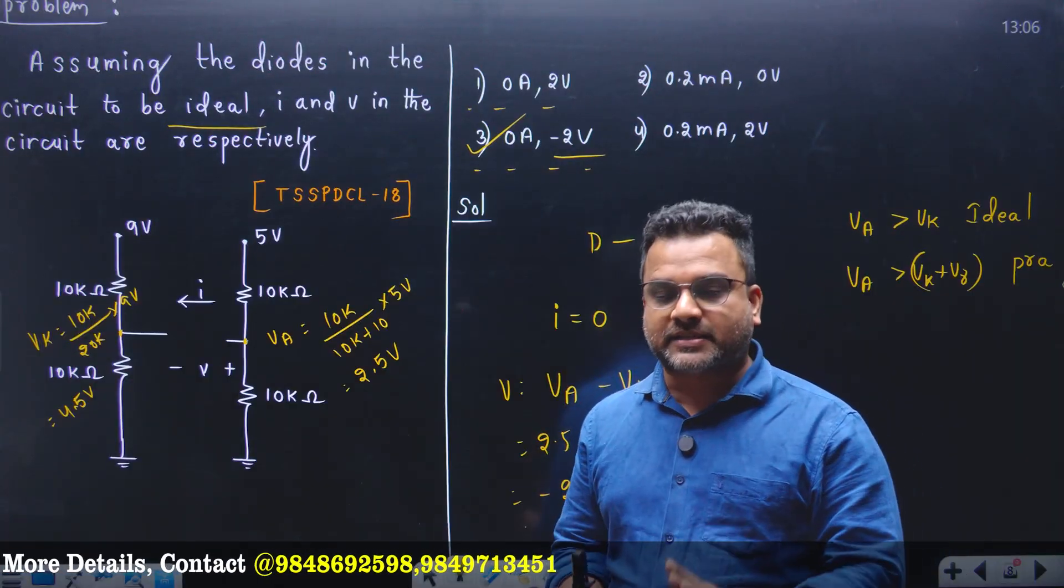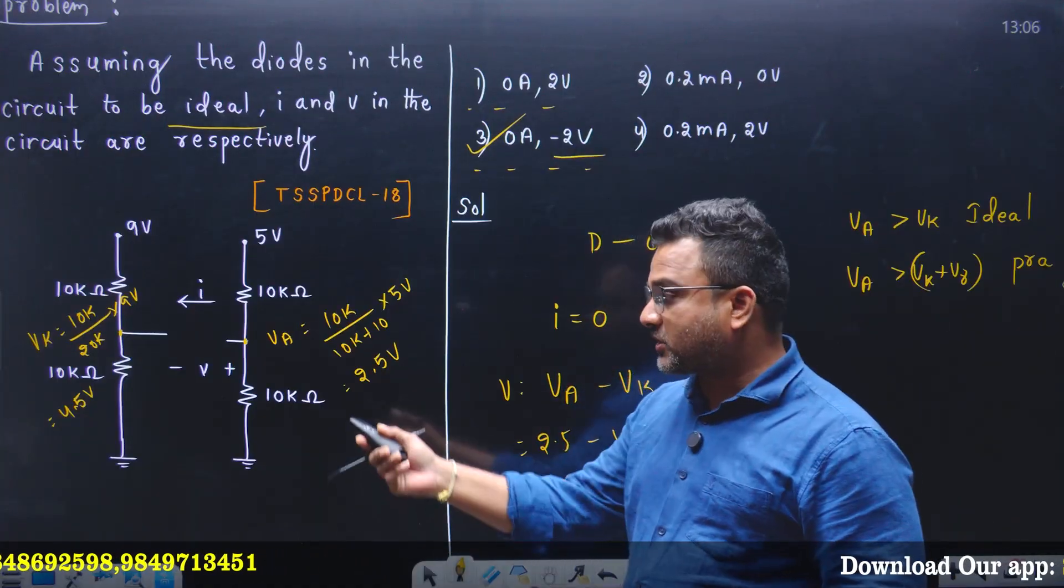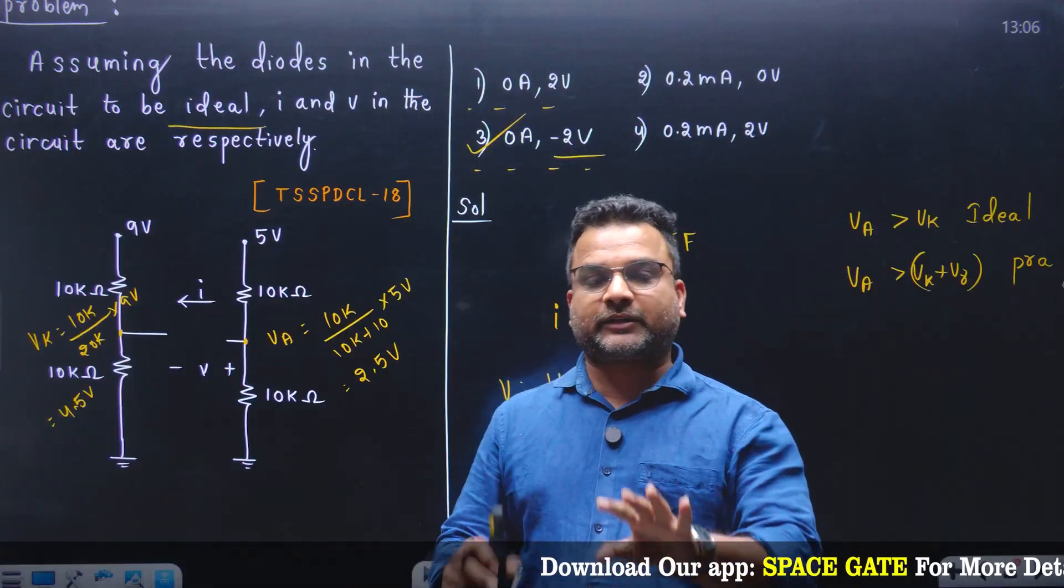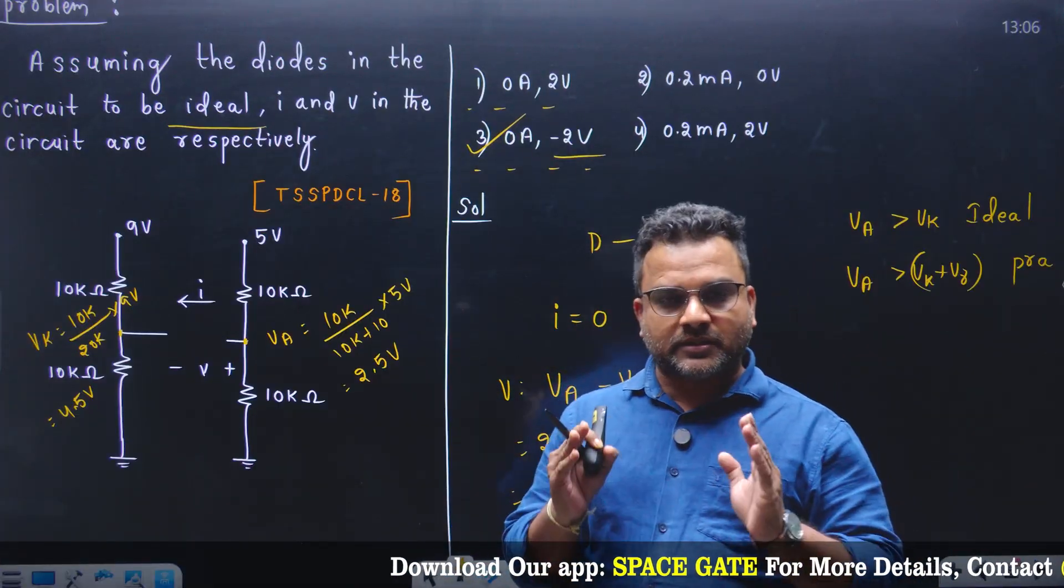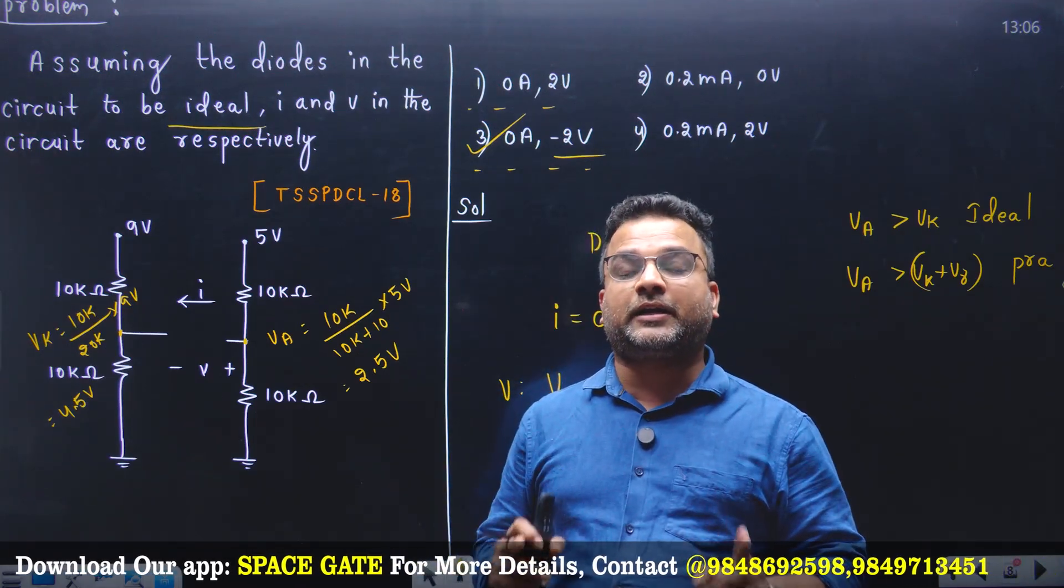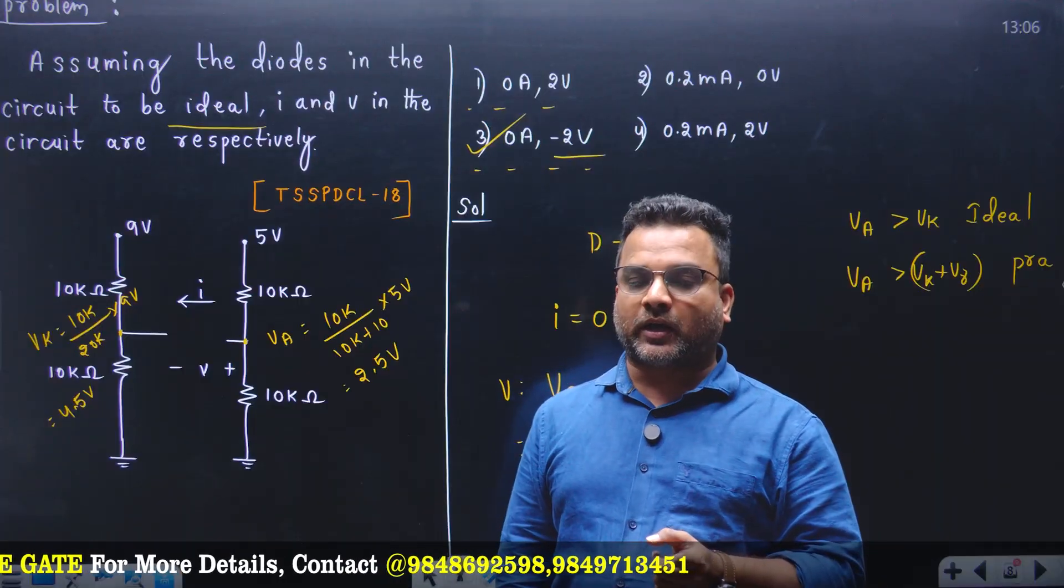For this circuit diagram, the voltage across the diode is minus 2 volts. Hence the right answer is option three. Remember, in diodes and semiconductor devices, voltage and currents are independent quantities. Current can be zero and voltage can be non-zero. In semiconductor devices, voltage and currents are independent entities, they are different parameters, you should not club them.